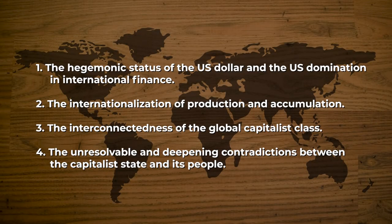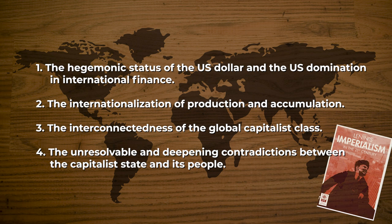These are the four characteristics of the current phase of imperialism as laid out by Pao Yuching in the book Lenin's Imperialism in the 21st Century. This book is highly recommended to read in order to understand imperialism in the past century and where it stands today. We can't have an understanding of the capitalist imperialist system without understanding these four characteristics and its development.